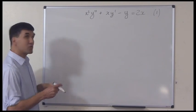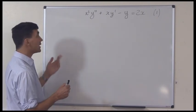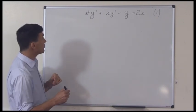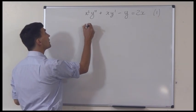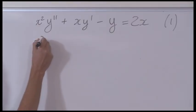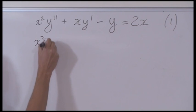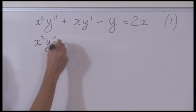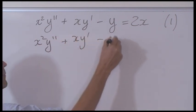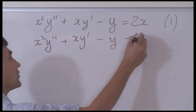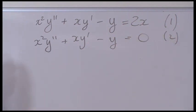We could try it just to see how it works. The way that procedure works is we write down the homogeneous version of that equation, which is x squared times y double prime plus x times y prime minus y equals 0. I'm going to call that equation 2.